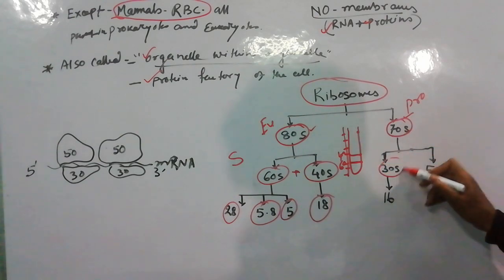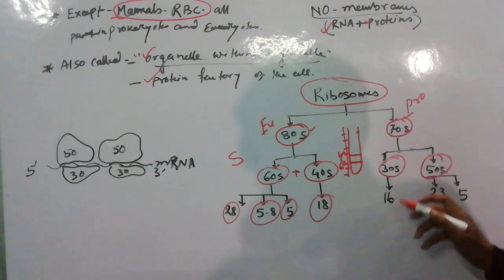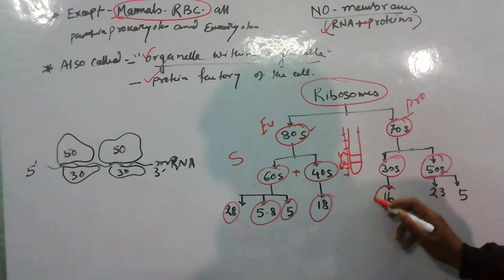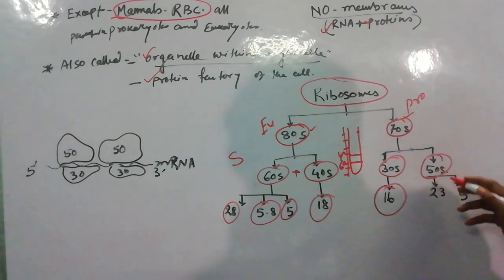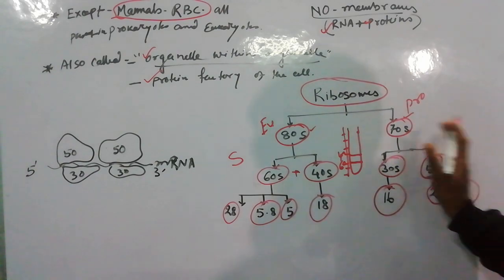And 70S is made of 30S and 50S subunit. And 30S subunit is 16S, and 50S subunit is made of 23S and 5S. So this is its distribution.